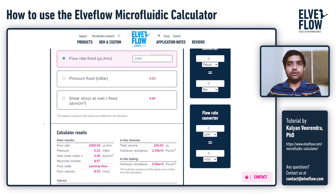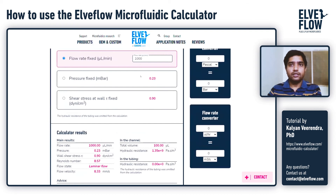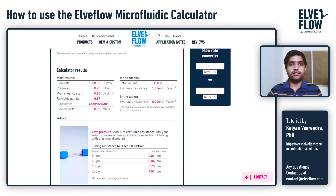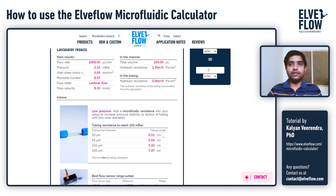The OB1 pressure controller is commonly configured to work in the range of 0 to 200 millibar or 0 to 2000 millibar. As you can see, 0.23 millibar is very low — a steady flow rate will be hard to achieve without adding resistance. In the advice section below, the calculator recommends adding microfluidic resistance to achieve a higher pressure and a more stable flow. Different inner diameter values are proposed along with the related tubing lengths to achieve 100 millibar. Here we will use a 250 micrometre inner diameter tubing with 8 centimetres of length before the chip.